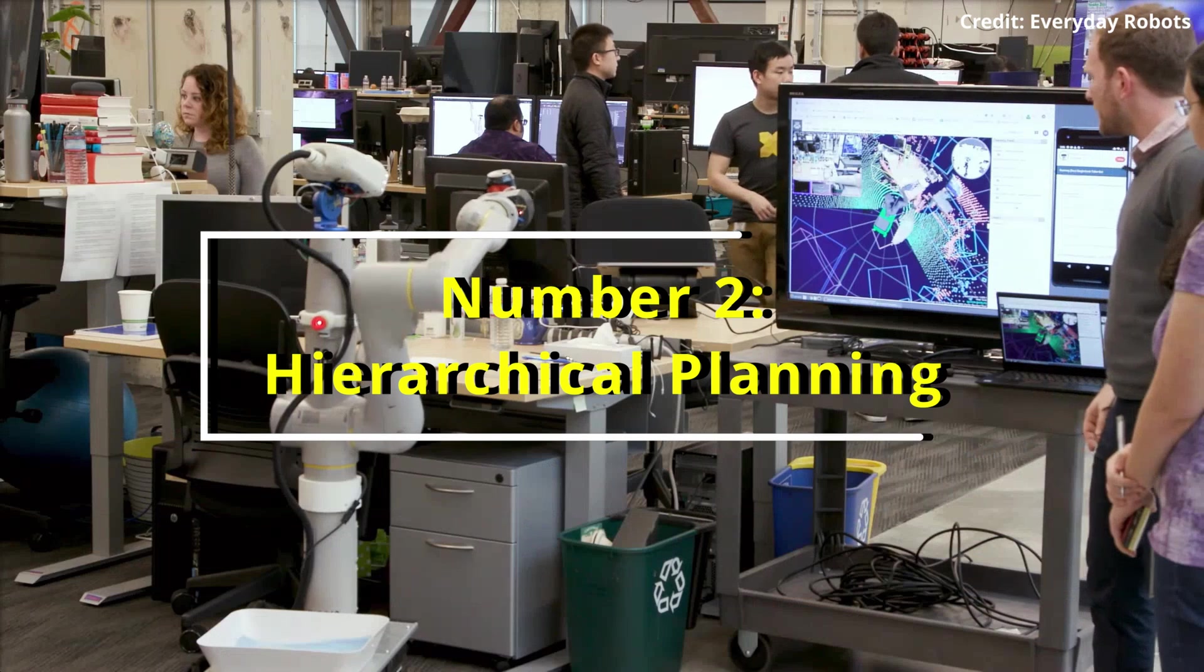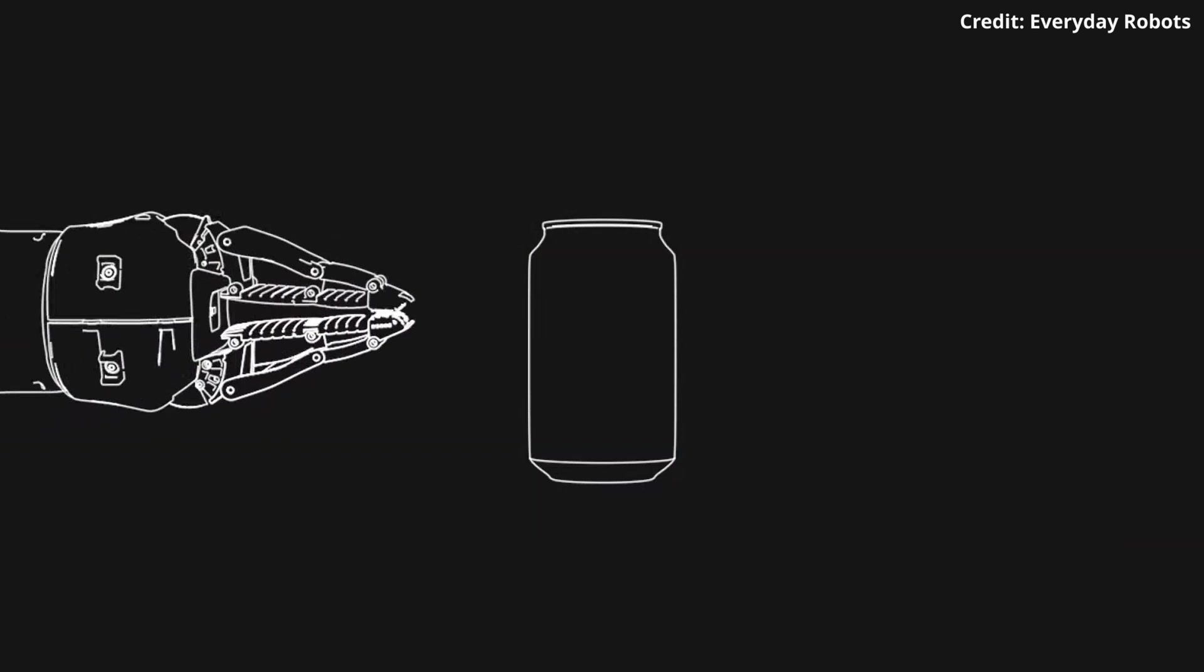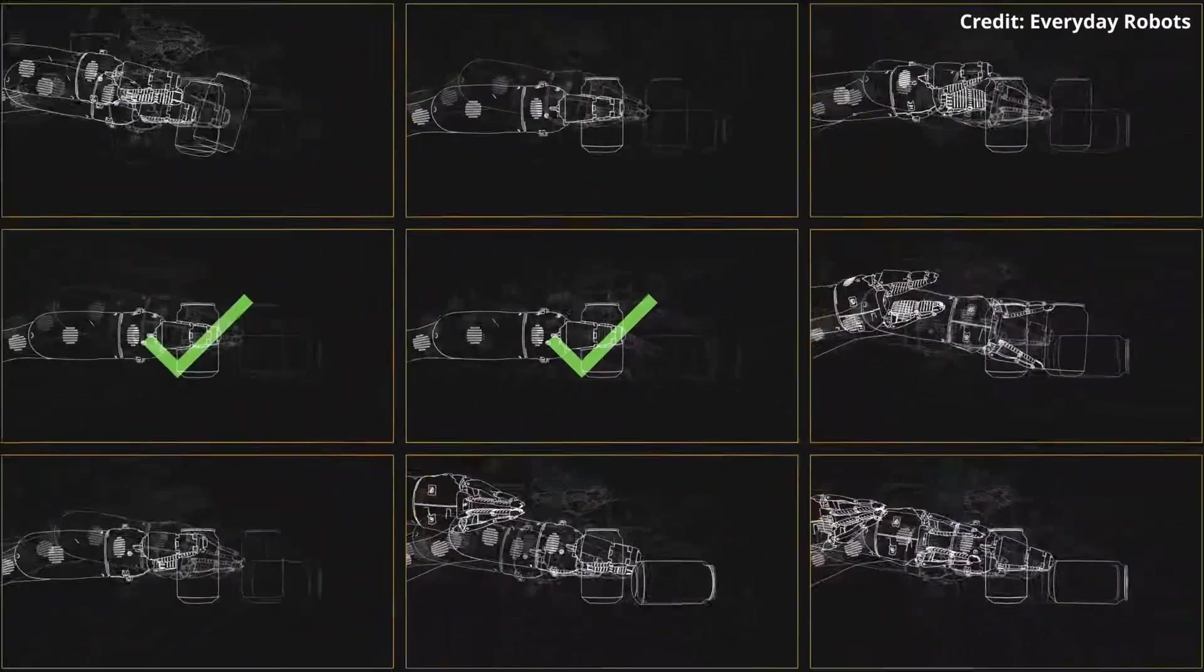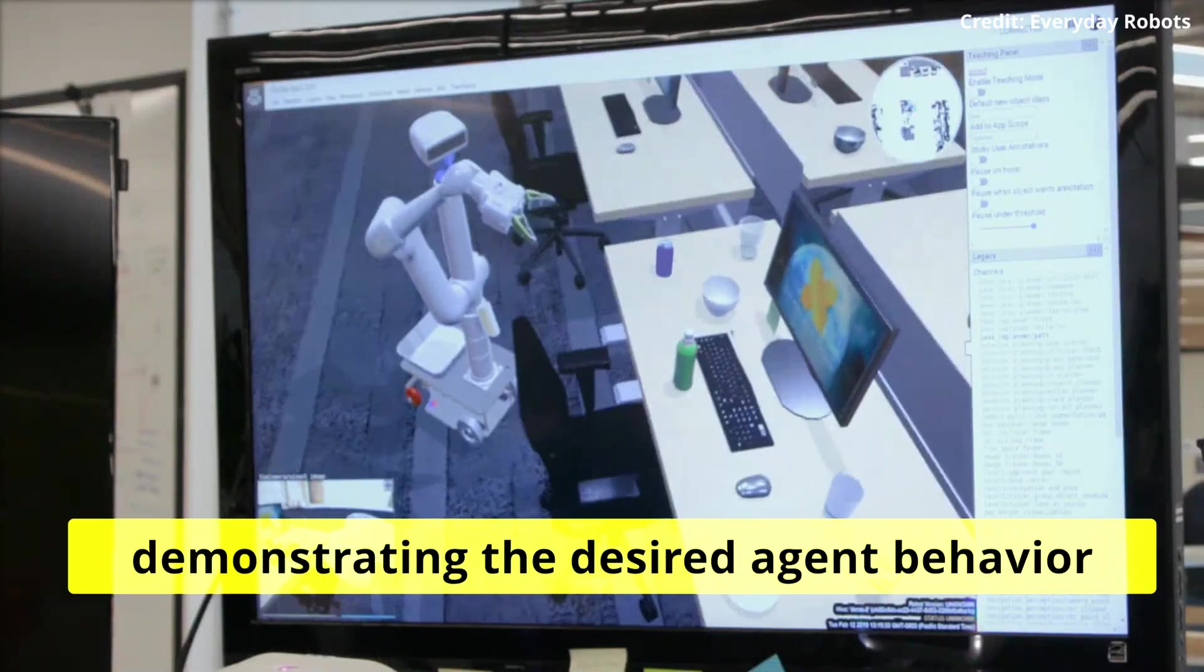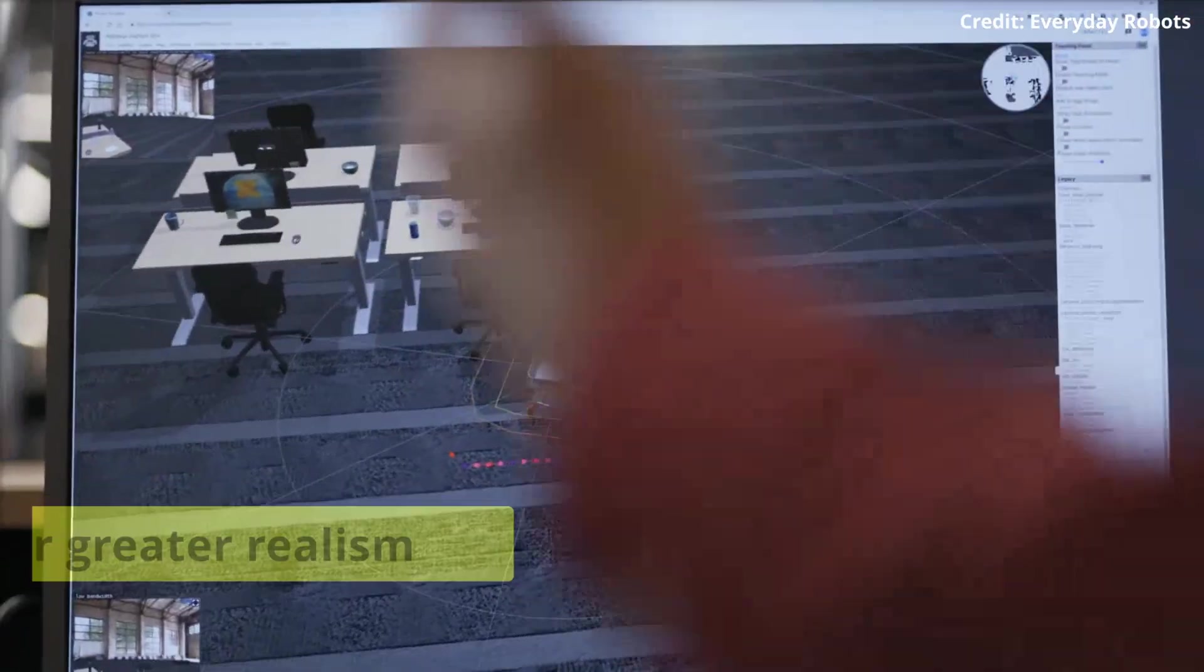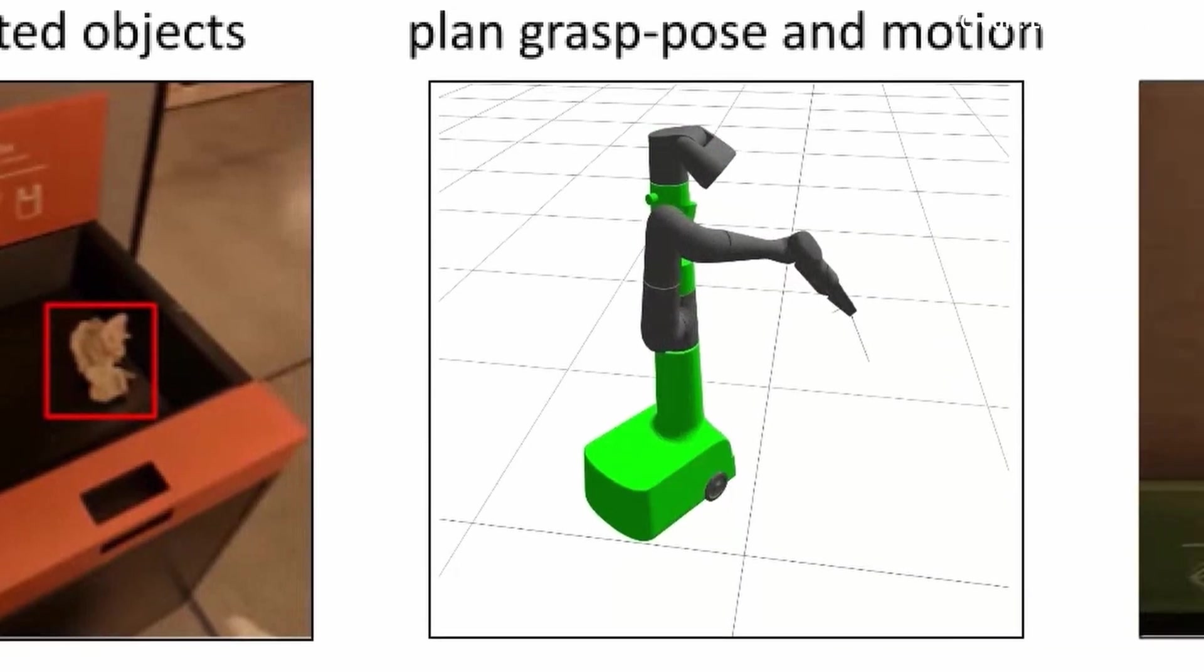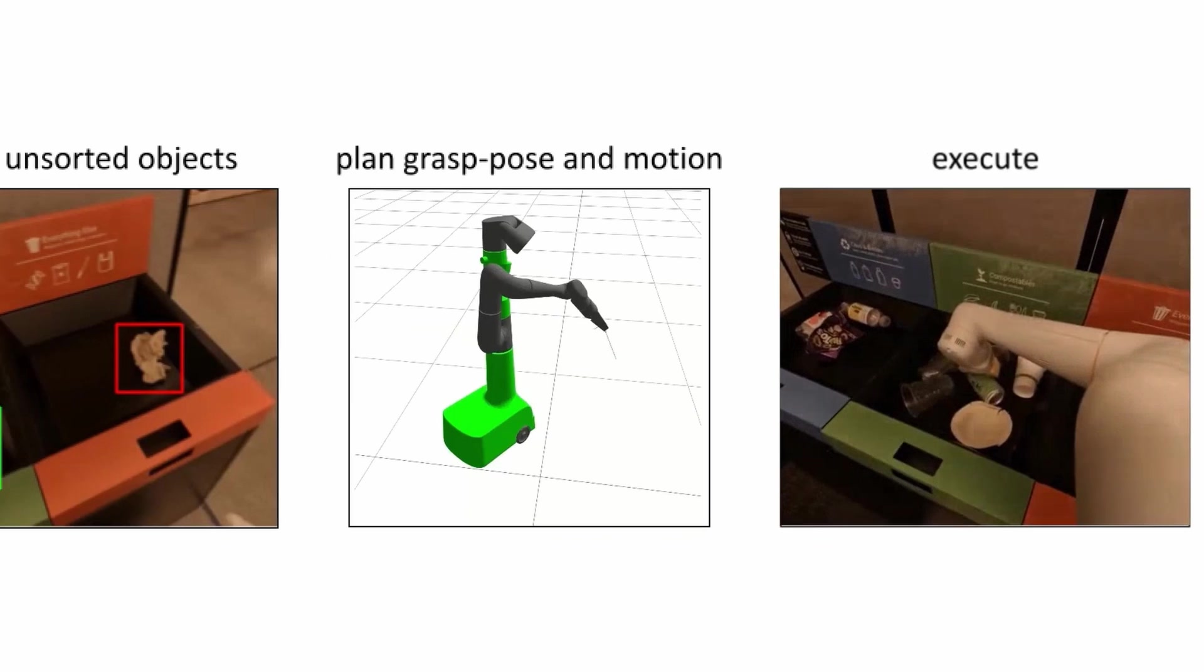Number two, hierarchical planning. Given the complexity of generating actions in a sophisticated environment, UniPi opts for hierarchical planning. It starts by creating videos at a coarse level demonstrating the desired agent behavior, and then refines them for greater realism by filling in missing frames and enhancing smoothness. This step-by-step approach ensures each level of detail is achieved, leading to high-quality video output.